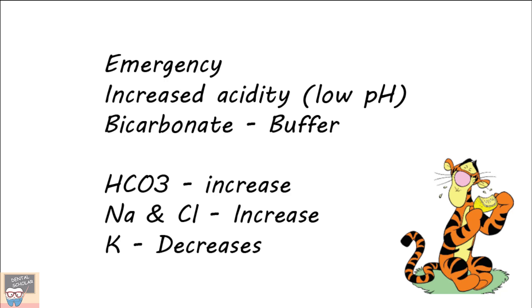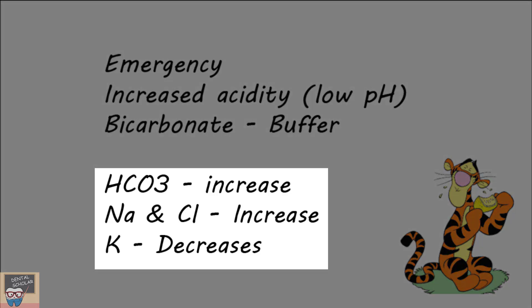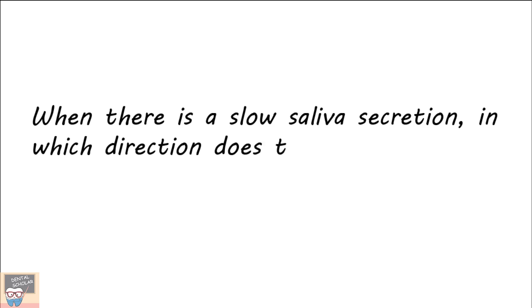So while sodium chloride and bicarbonate increase, potassium decreases in rapid salivary flow. Next question, when there is a slow saliva secretion, in which direction does the concentration of these four ions vary?